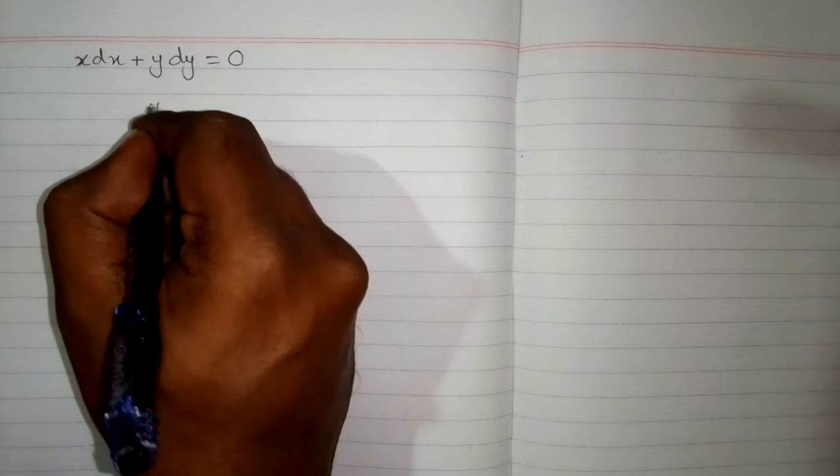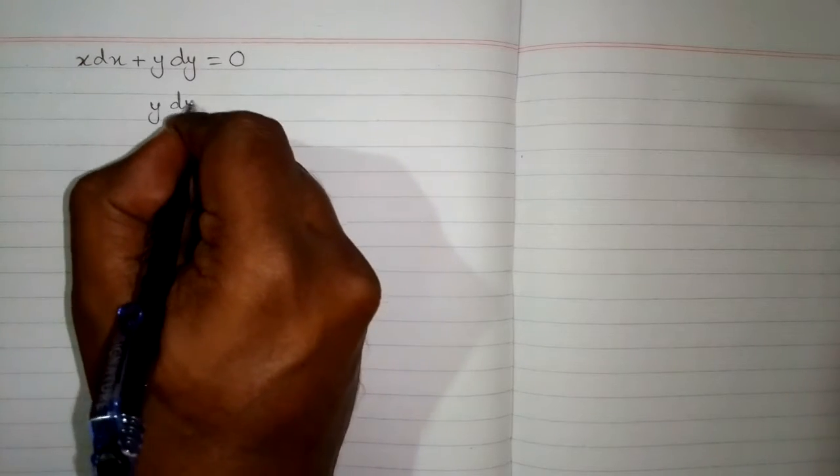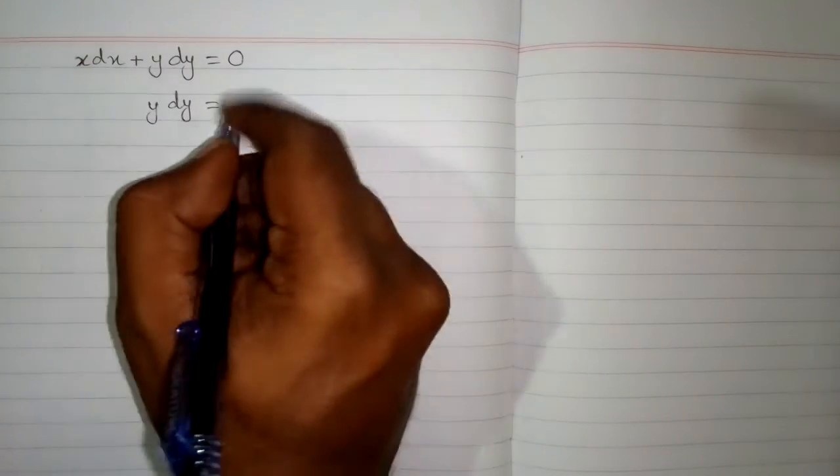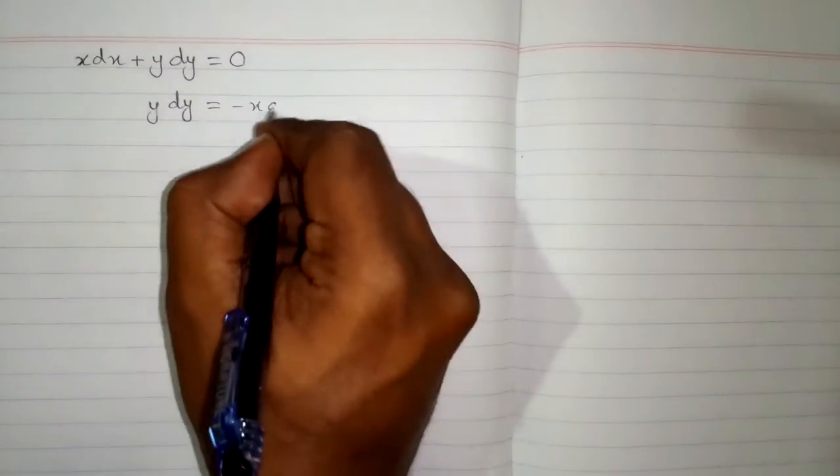Now this equation can be written as y times dy is equal to minus x times dx.